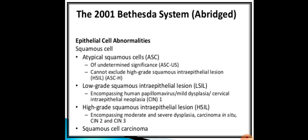According to the Bethesda system revised in 2001 and 2014, epithelial cell abnormalities on pap smear are classified as: atypical squamous cells of undetermined significance (ASC-US), atypical squamous cells cannot exclude HSIL (ASC-H), low-grade squamous intraepithelial lesion (LSIL) encompassing HPV, mild dysplasia and CIN 1, high-grade squamous intraepithelial lesion (HSIL) encompassing moderate and severe dysplasia, carcinoma in situ, CIN 2 and CIN 3, and squamous cell carcinoma.